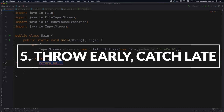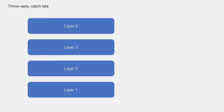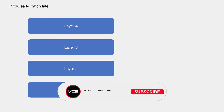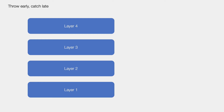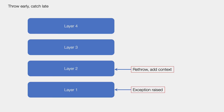The last and most important best practice is a design-level approach known as throw early, catch late. When your application has multiple layers, throw the exception as early as possible — as close to its origin as possible — so you get the right context. Catch the exception late, meaning treat it where you have enough context to make a decision. For example, if an exception is raised in layer one, propagate it up, adding context along the way, until a higher layer can take an application-level decision.